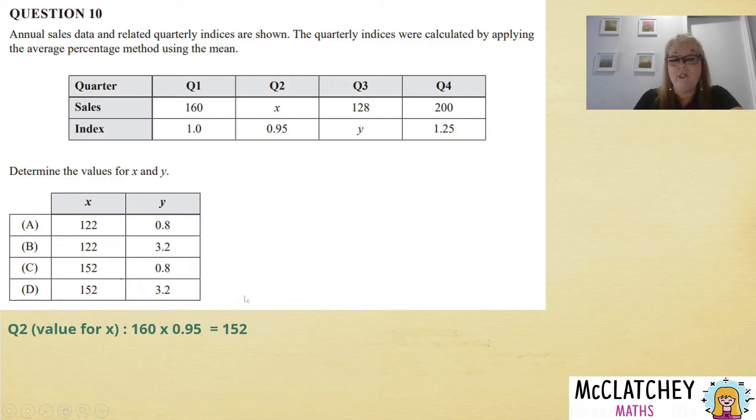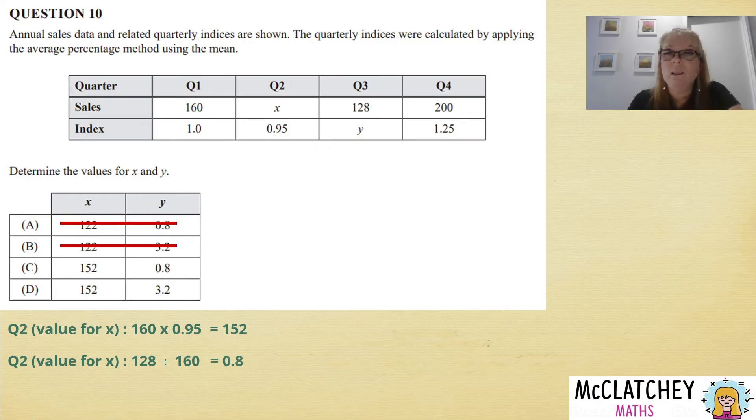Okay, our next one: we're going to be looking at quarter 3. Now, with quarter 3, remember what we did—we took this number and divided it by 0.95. This time, we need to work out what fraction this number here is of this number. So we're going to do 128 divided by 160. That gives us 0.8—it's 80% of that original value, which means that C is our only possible answer.